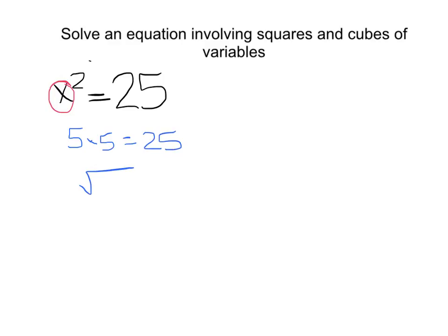I could write it as the square root of 25 equals 5, because really you're taking the square root to cancel that out so that you can get x equals 5.